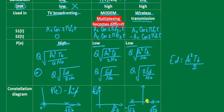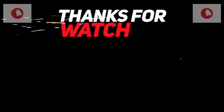In the constellation diagram, the distance between the two ASK points is small, so the probability of error is high. The two PSK points are far apart, so the probability of error is low. Therefore, PSK is preferred over ASK. In summary, this video covered the basic differences between Amplitude Shift Keying, Frequency Shift Keying, and Phase Shift Keying.